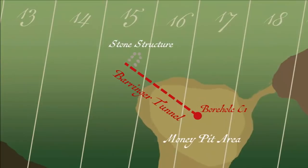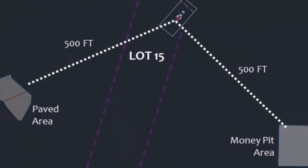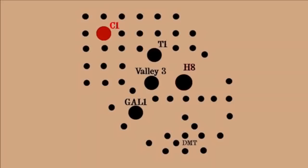Intriguingly, two parallel rock walls sit on the line of the supposed tunnel suggested by both surveys, apparently leading into the hill on the slopes of which they lie. Later in the episode, surveyor Steve Guptill discovers that these stone walls are located exactly 500 feet from both the paved area and the Money Pit area.